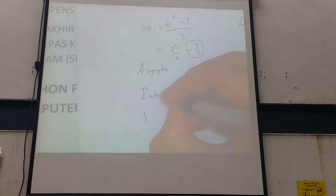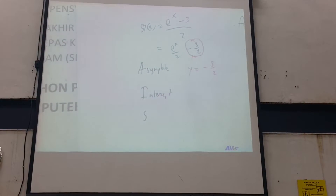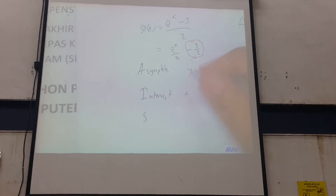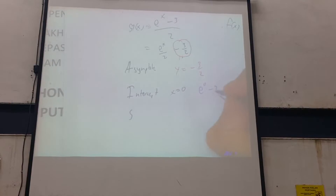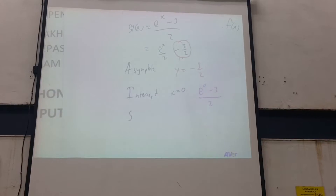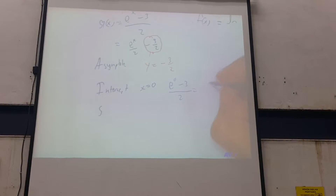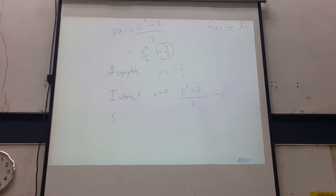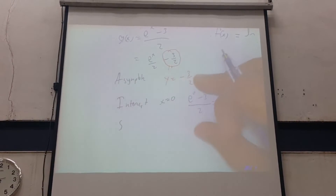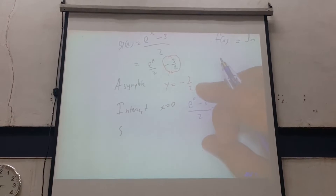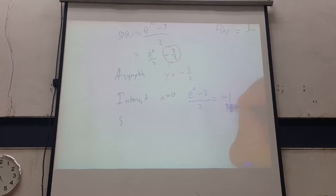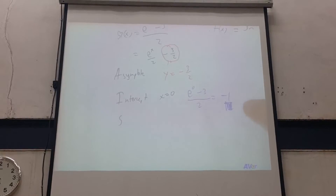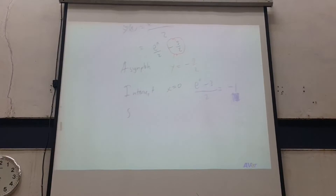Next one is intercept. How do you find the intercept for this? X equals to 0. So that means 1 over 2, E0, negative 3 over 2. You may press your calculator. What do you get? Negative 1. Negative 1? Yes. Negative 1 over 2. Do you want me to explain again? Yes. Negative 1, sir? Yes. Sorry, my calculation. I'm horrible. Negative 1. Are you okay? Yes.